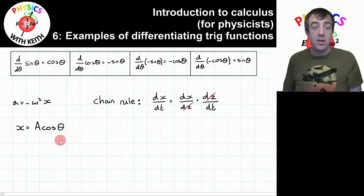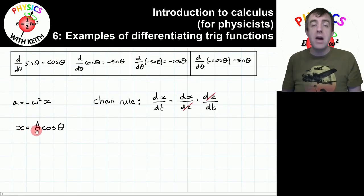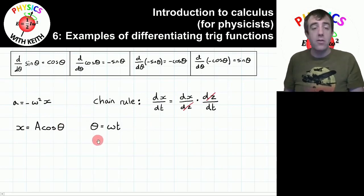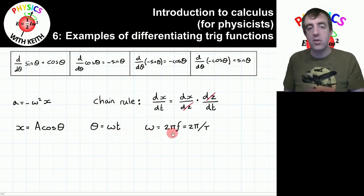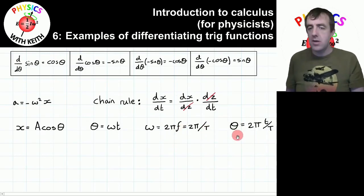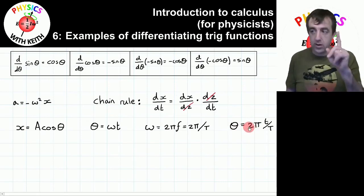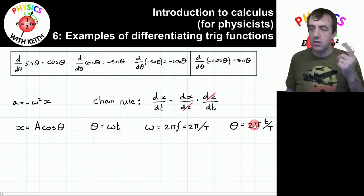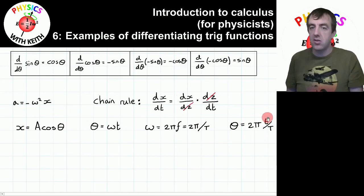If a body is undergoing simple harmonic motion, then its displacement can be described by this equation: A is the maximum displacement — the amplitude — and theta is the phase. Just as before, the phase is omega t, where omega, the angular frequency, is two times pi times the frequency. Frequency is the reciprocal of the time period, and that means the phase can be described as two pi — one complete oscillation — multiplied by the fraction of an oscillation, which is the time since we started oscillating divided by the time period.